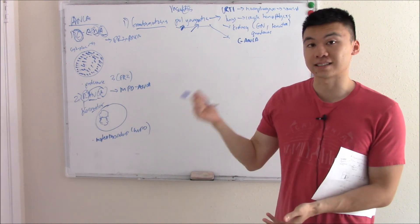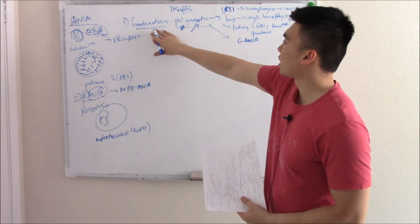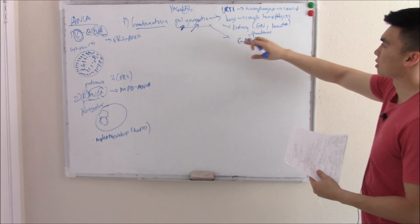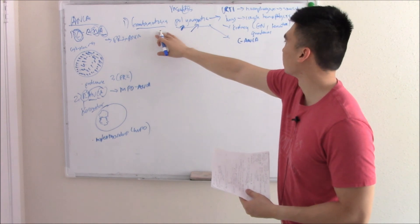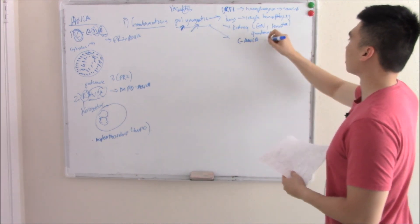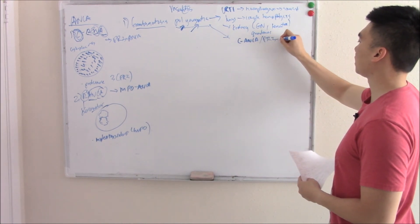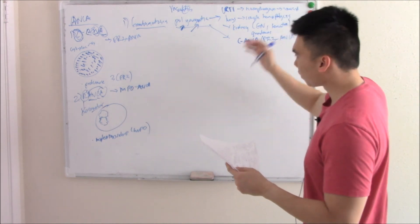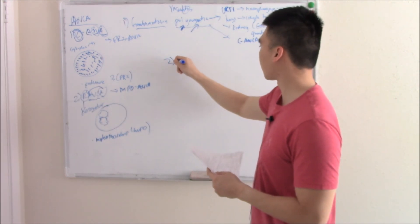Let's jump back into our talk on vasculitis. We had granulomatosis polyangiitis. We said it causes inflammation of multiple vessels - that's the polyangiitis part. It causes granulomas, and it's associated with c-ANCA, also known as PR3-ANCA.